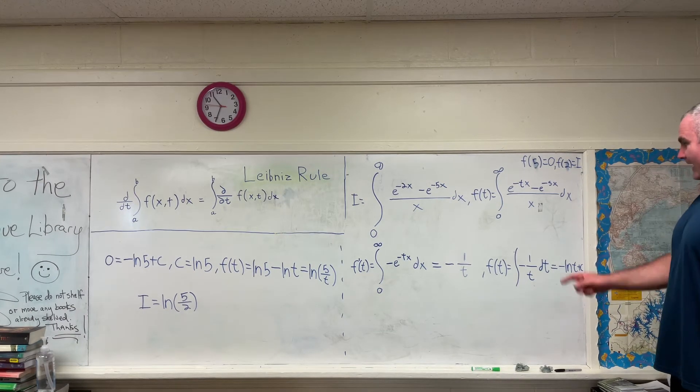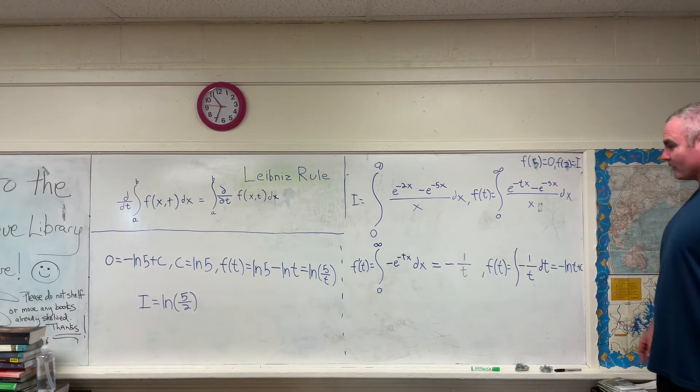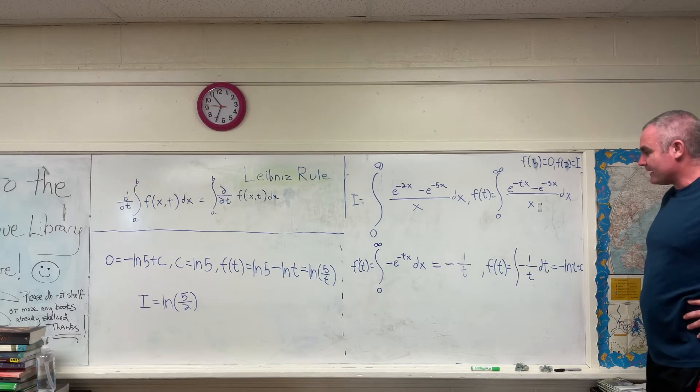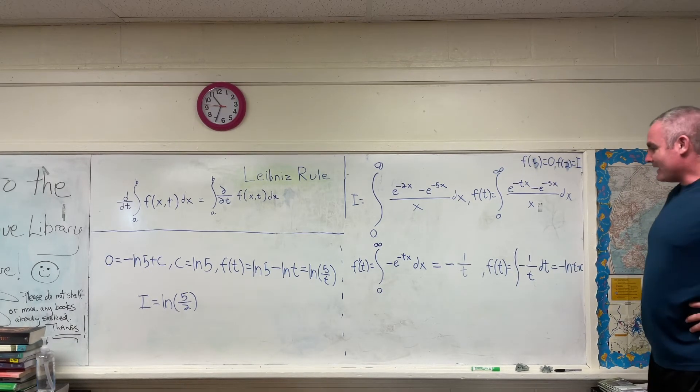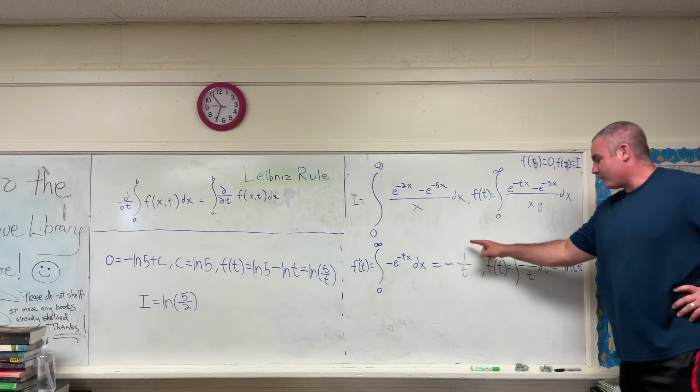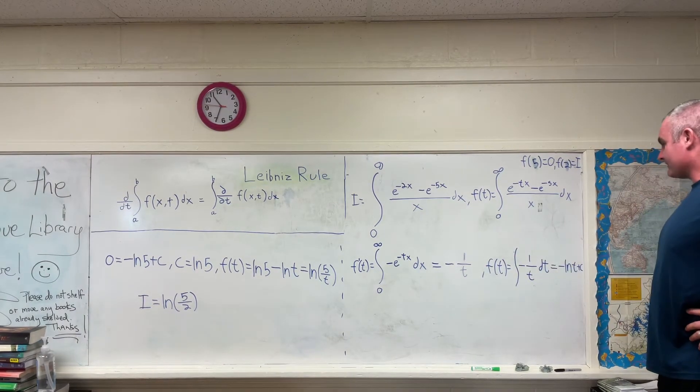So, again, we have that f prime of t is equal to the integral from 0 to infinity of negative e to the negative tx dx, which, if you evaluate it, you will get negative 1 over t for an answer.